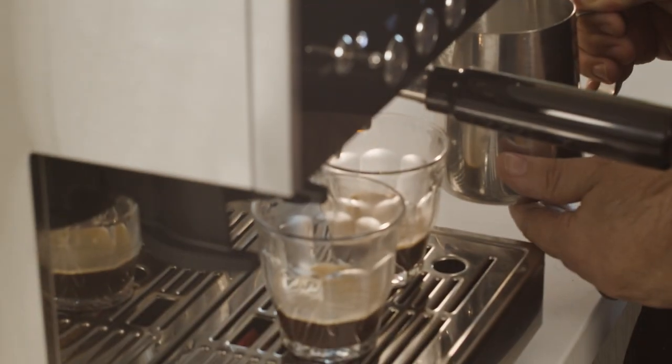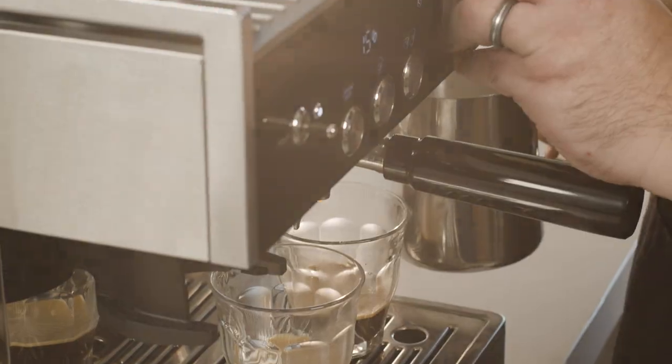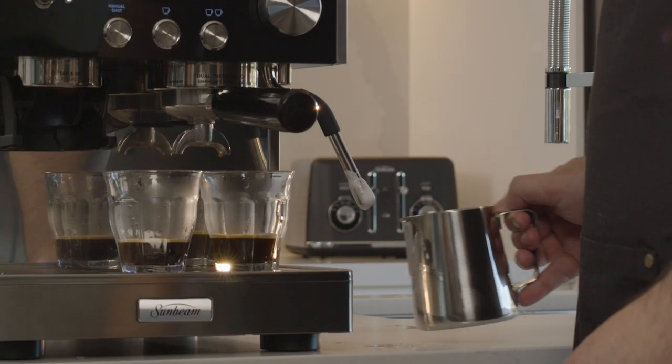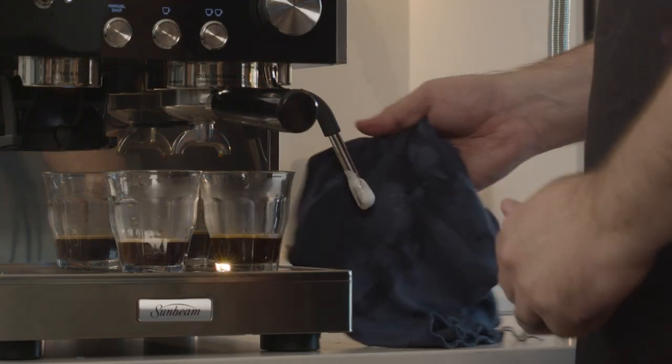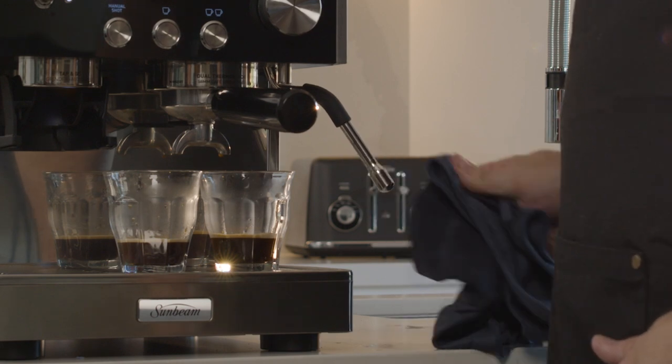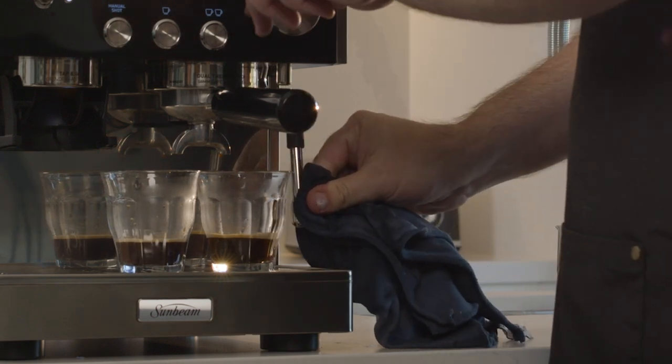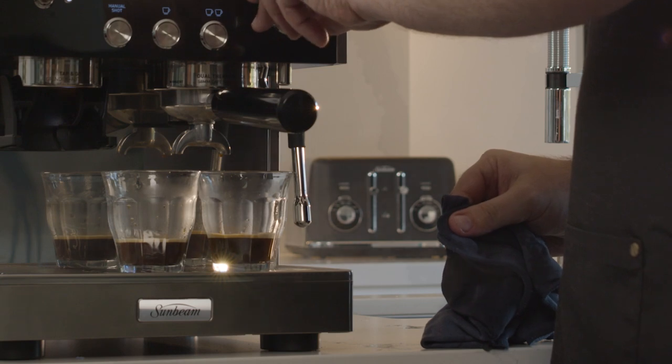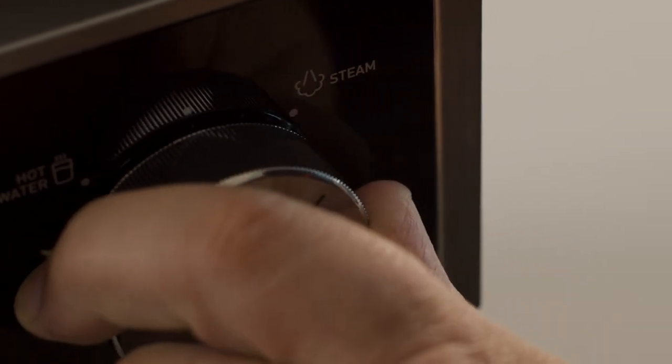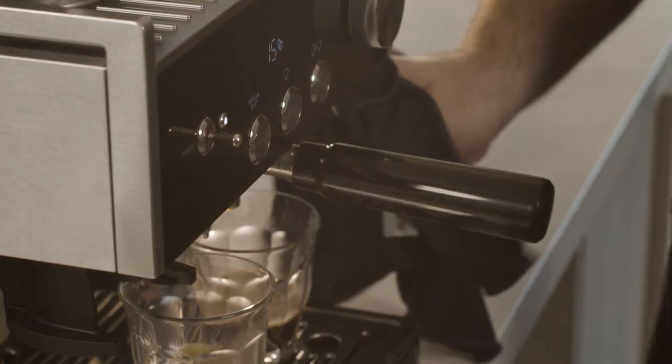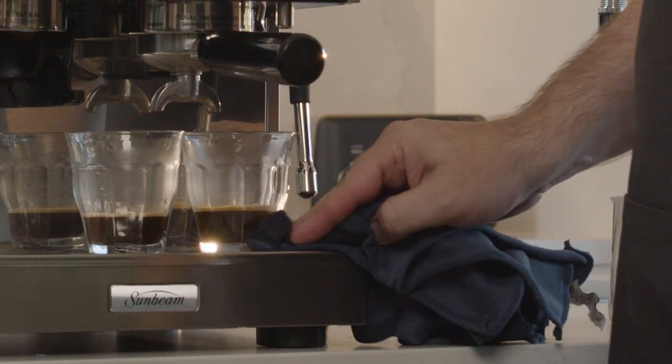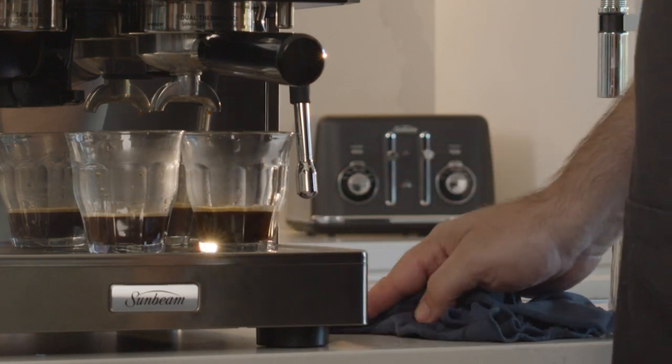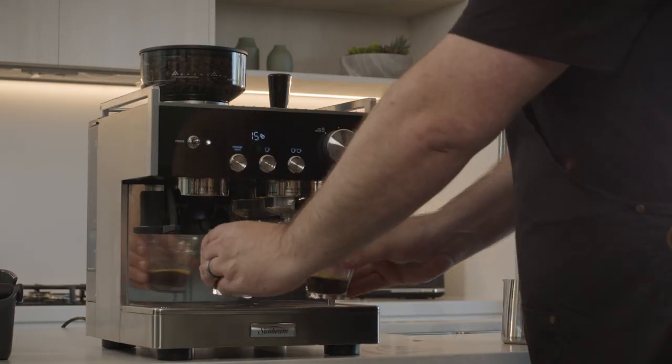When the milk is ready, return the steam lever to the off position and remove the milk jug from the steam wand. Remember to wipe the wand and tip with a damp cloth and always purge the steam wand immediately after milk texturing. You can do this by turning the steam on for one to two seconds and then turn it back to the off position. Purging ensures the steam wand is clean and ready for your next coffee.